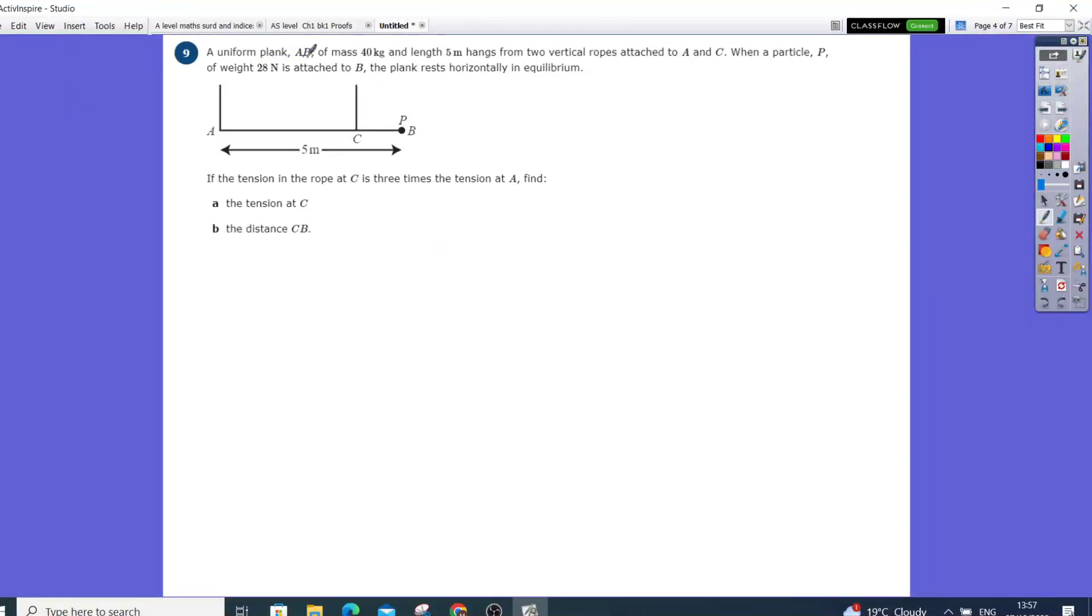Okay, so it says a uniform plank A to B has mass 40 kg, so it stands uniform and straight. In the middle you've got the mass acting down, which is going to be 40g. It's five meters long.